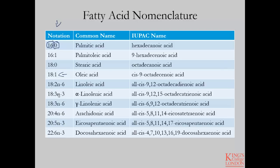You can see this trend continues. There is some confusion surrounding fatty acids which contain the same number of double bonds and the same number of carbons, but a different arrangement of double bonds. A good example of this is linolenic acid: you can have either 18:3 N-3, which refers to an omega-3 fatty acid, or 18:3 N-6, which refers to an omega-6 fatty acid. Under the common names, you would refer to these as alpha-linolenic acid and gamma-linolenic acid.